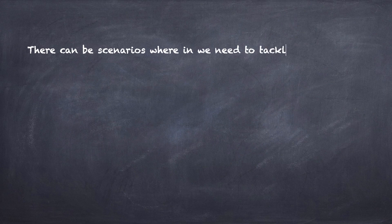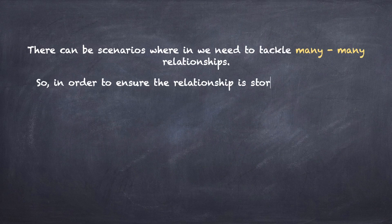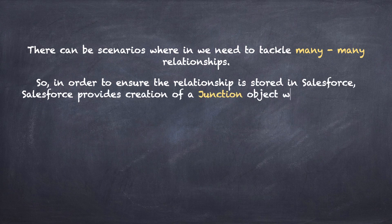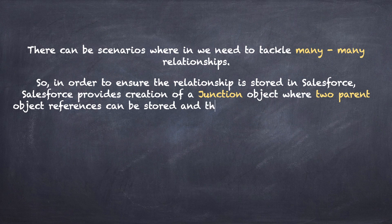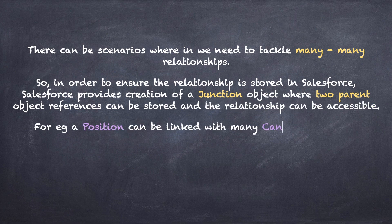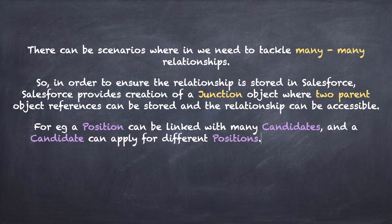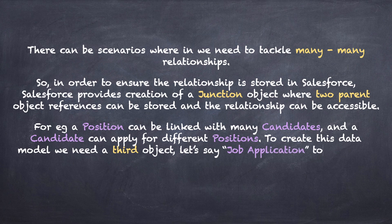What is a junction object in Salesforce? There can be scenarios where we need to tackle many-to-many relationships. Salesforce provides the ability to create a junction object where two parent object references can be stored and the relationship can be accessible. For example, a position can be linked with many candidates, and a candidate can apply for different positions — to model this we need a third object, which would be job application.